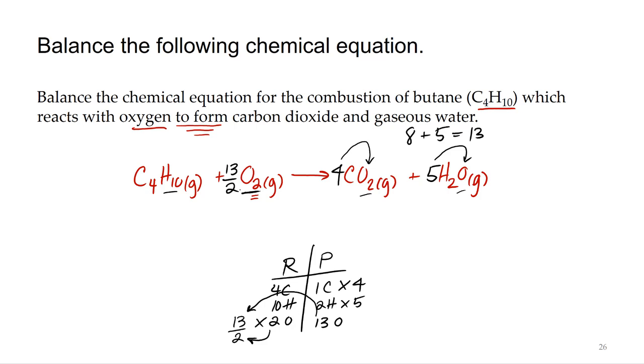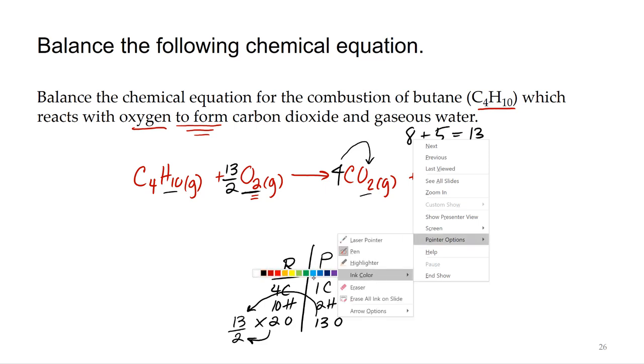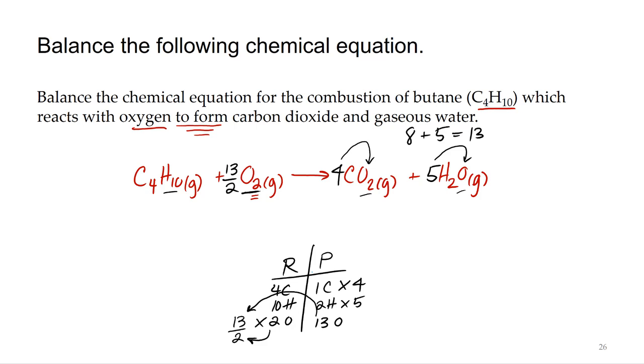Now technically that is a balanced chemical equation. You will see chemical equations with fractional coefficients, but in general chemistry we like to get them to whole number ratios because eventually we'll start using the coefficients for stoichiometry and it's just a lot easier to work with whole numbers. So what I'm going to do is I'm going to get rid of that coefficient by multiplying through by the denominator. I'm going to take this whole equation and multiply by 2, and when I do that I'll get rid of that fraction and then of course balance my equation all in one step.